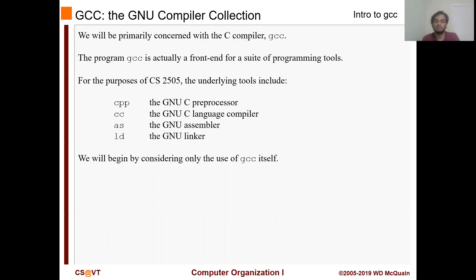The program GCC is actually a front end for a suite of programming tools. For the purpose of this course, the tools we have are CPP, CC, AS, and LD. CPP is the C preprocessor and CC is the compiler itself. AS is the assembler and LD is the linker.